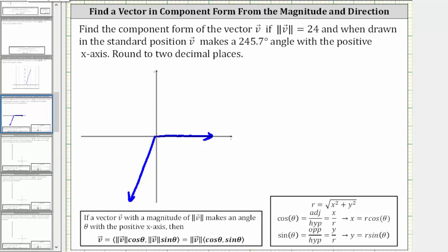The angle of rotation or direction of the vector is indicated by this angle, which measures 245.7 degrees. We know the magnitude of the vector is 24, which means the length of this vector is 24 units. Let's label this: the magnitude of vector v equals 24.